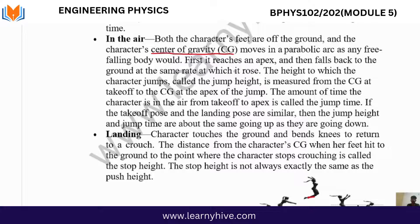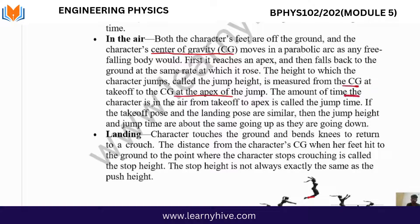The height to which the character jumps is called the jump height, measured from the centre of gravity at takeoff to the centre of gravity at the apex of the jump. The amount of time the character is in the air from takeoff to apex is called jump time. If the takeoff pose and landing pose are similar, the jump height and jump time going up are about the same as going down.